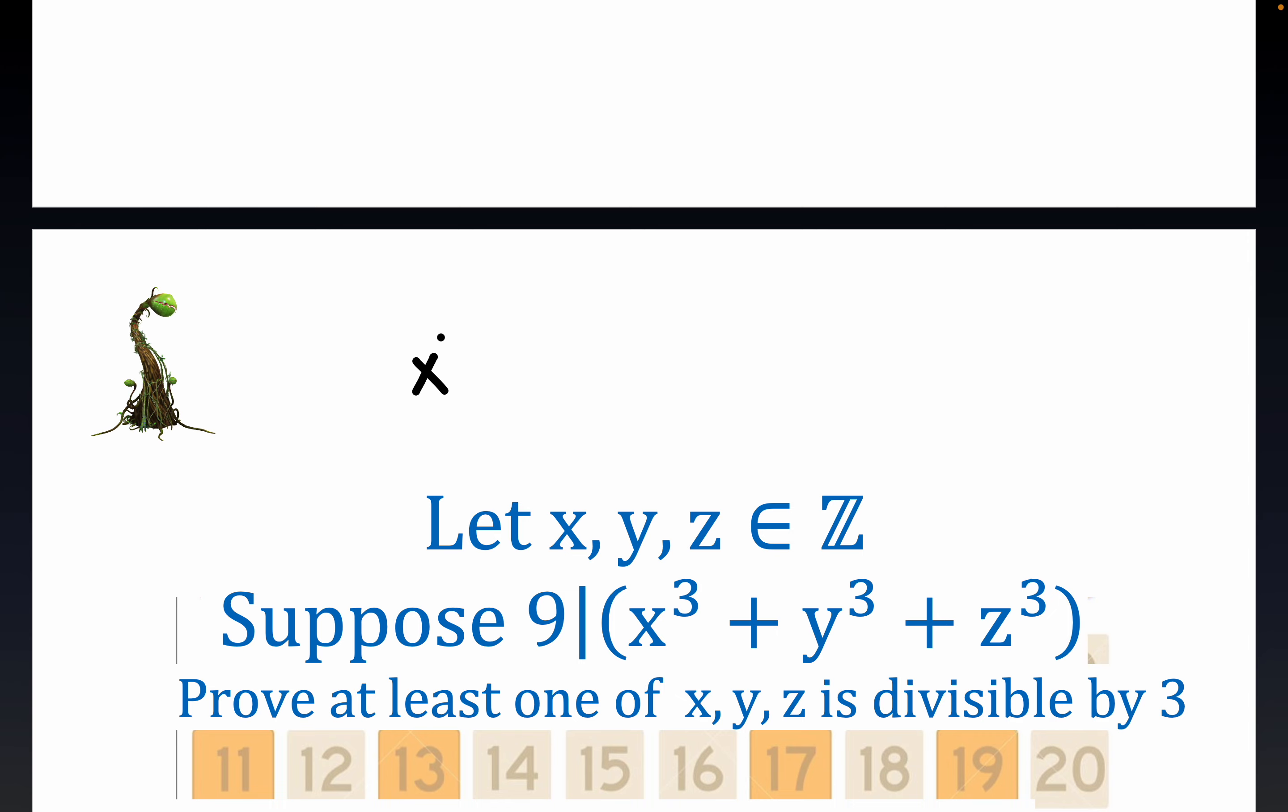Another way of writing our supposition here is in the modular arithmetic form x cubed plus y cubed, where x, y, and z are integers—just the positive and negative integers—plus z cubed. Now another way to write this statement that 9 divides the sum x cubed plus y cubed plus z cubed is to write x cubed plus y cubed plus z cubed is congruent to 0 mod 9. Mod is an abbreviation for modulo.